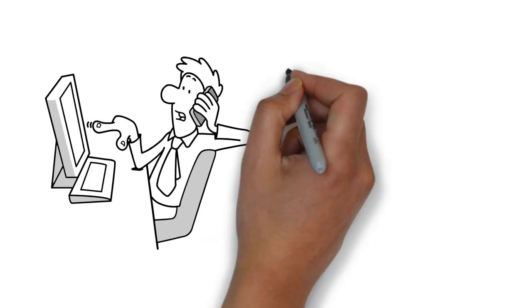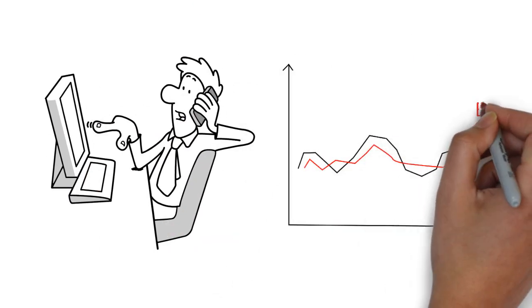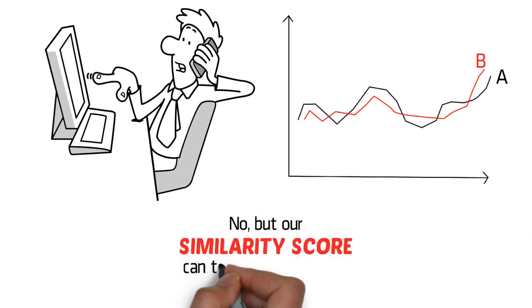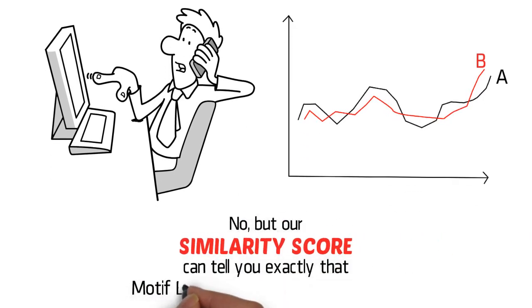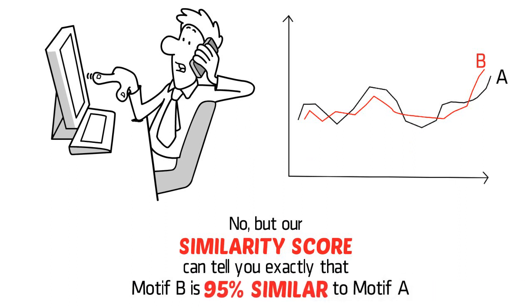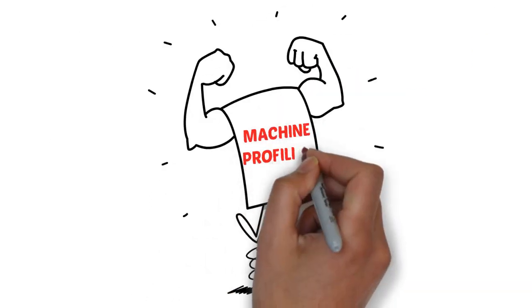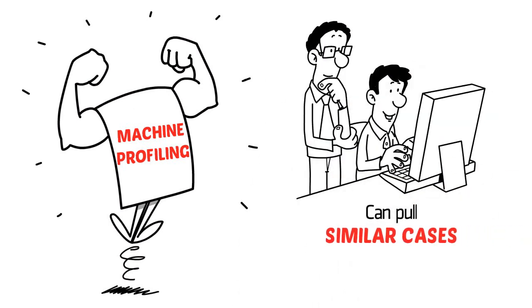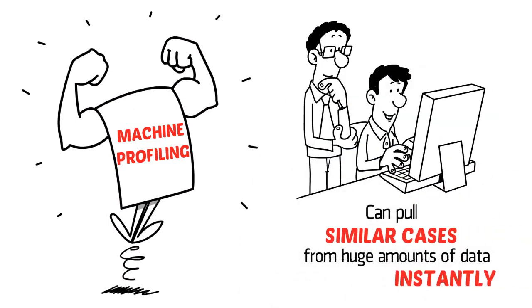Can the human eye assess the similarity between motif A and B? No — but our similarity score can tell you exactly that motif B is 95% similar to motif A. With the power of machine profiling, search professionals can pull similar cases from huge amounts of data instantly.